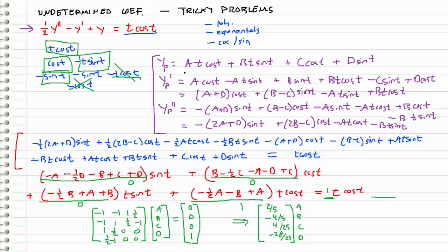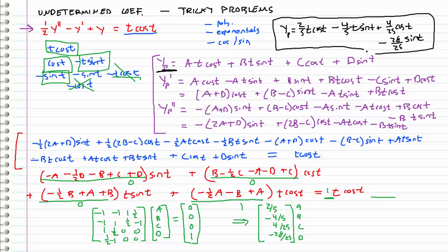Now that we've determined our coefficients, we plug them into our assumed form. The particular solution is: yp = (2/5) t cosine t − (4/5) t sine t + (4/25) cosine t − (28/25) sine t. This is the particular solution, not the general solution, since we never solved for the homogeneous part. I do want to stress the importance of finding the homogeneous solution first, to make sure each term in the particular solution is linearly independent.